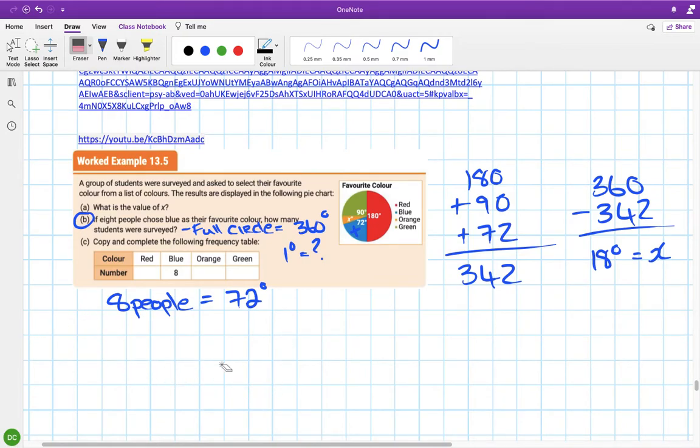Eight people are 72 degrees. But it's not the one person I need, it's one degree that I need. So going from here to here, that's 72 times smaller, or 72 divided by 72 equals one. The right-hand side makes sense, so I have to apply that to the left-hand side.